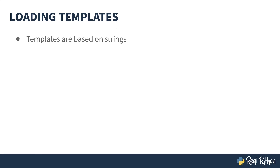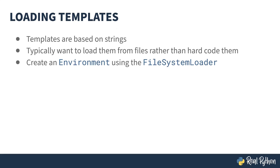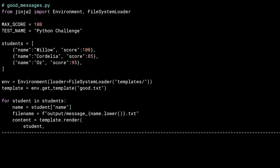Templates are based on strings, but a far more common way of getting a template is to load them from a file rather than hard coding them in your program. This is where the environment comes in. When you construct an environment, you can tell it to load templates from a directory. Suppose you were teaching a course on Python and you wanted to send a customized message to the students who did well on a recent test. Templates allow you to do this using a concept similar to a mail merge in word processing tools.